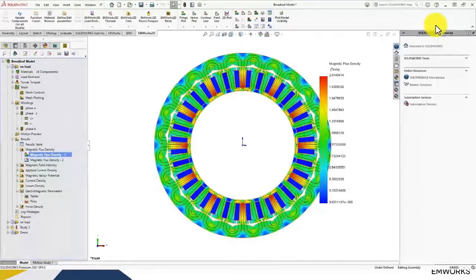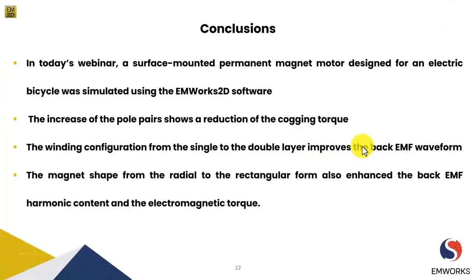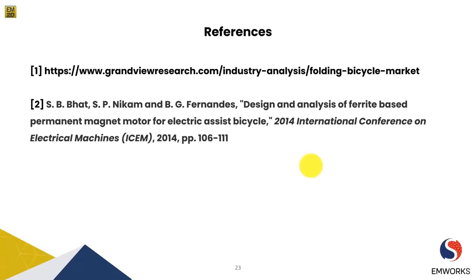That was a quick demonstration of our EMWorks 2D software. To conclude today's webinar: we used a surface mounted permanent magnet outer rotor design for electric bicycle application, using EMWorks 2D for simulation and performance analysis. We increased the pole pairs to reduce cogging torque, switched the winding configuration from single to double layer, and changed the magnet shape from radial to rectangular, resulting in enhanced back EMF with lesser harmonic content and improved electromagnetic torque.